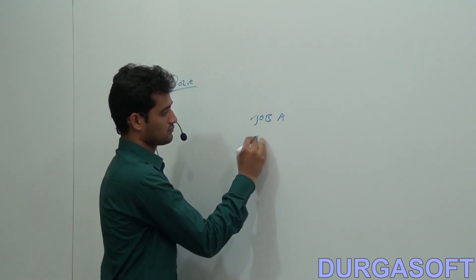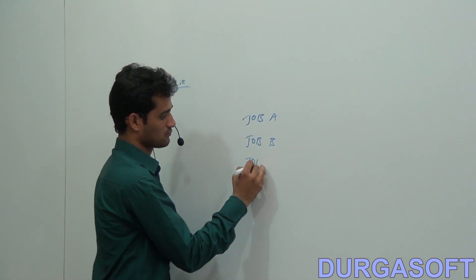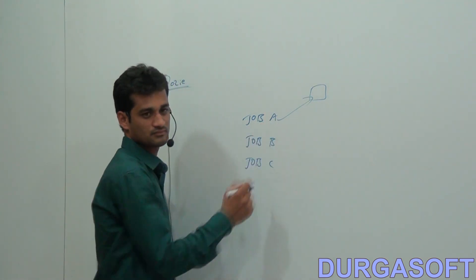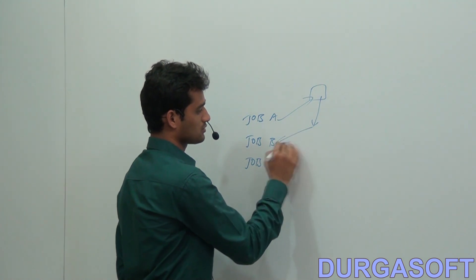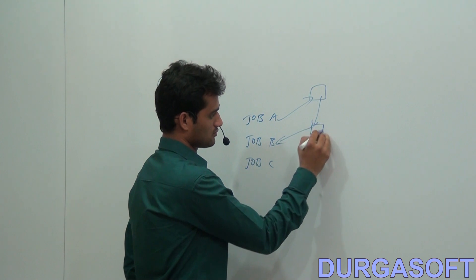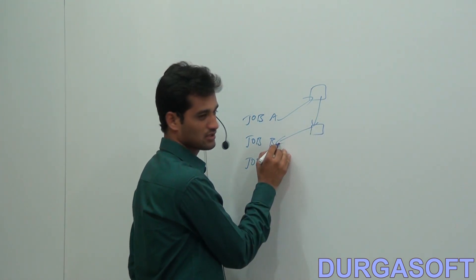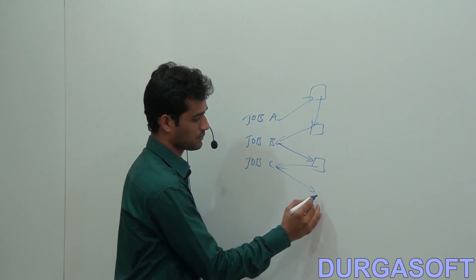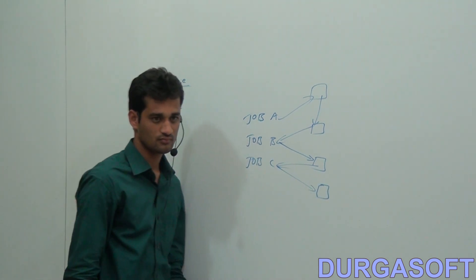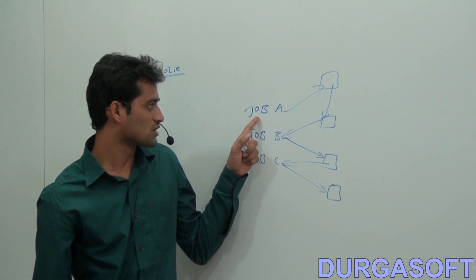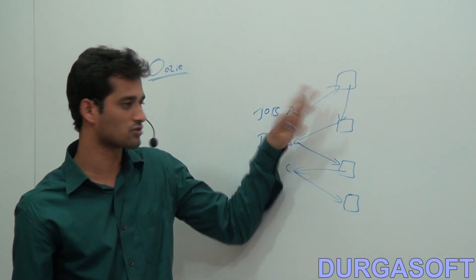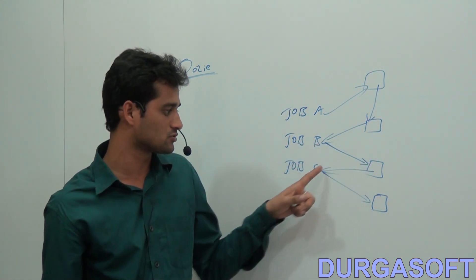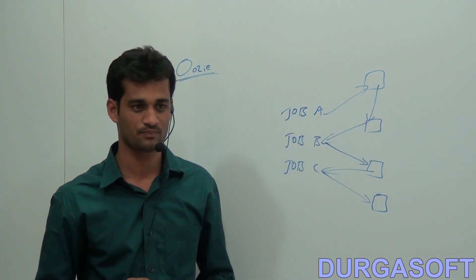For example, suppose we have Job A, Job B, and Job C with one dataset. I process that dataset with Job A, it gives some output. I take that output as input for Job B, process it again, get some output, and pass that output to Job C as input. Finally, Job C will give the proper output.